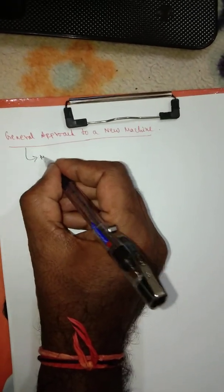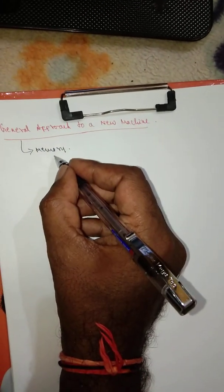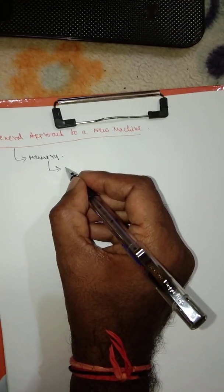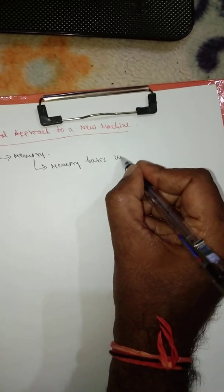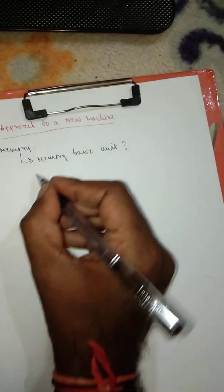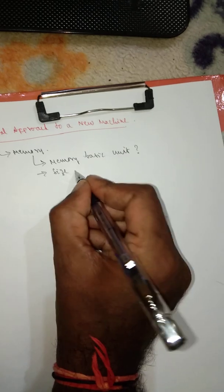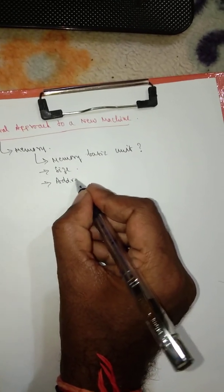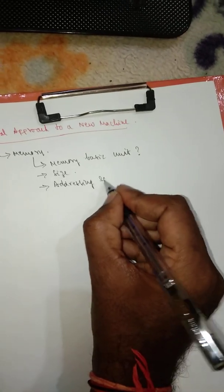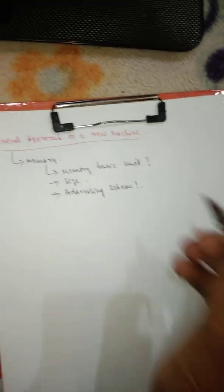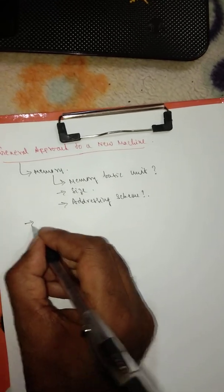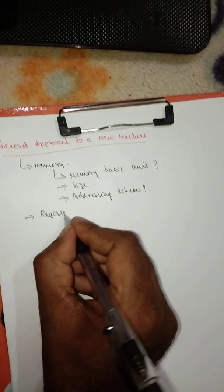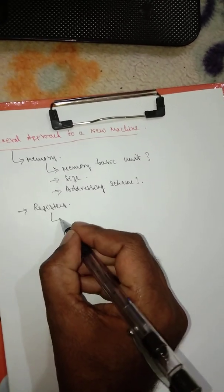The first and foremost thing we need to ask ourselves is about memory. Memory is one key important aspect. The basic things we need to decide are: what should be the memory basic unit, what should be the size, and what kind of addressing schemes we would like to have.